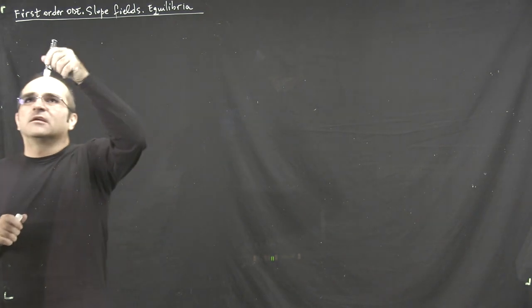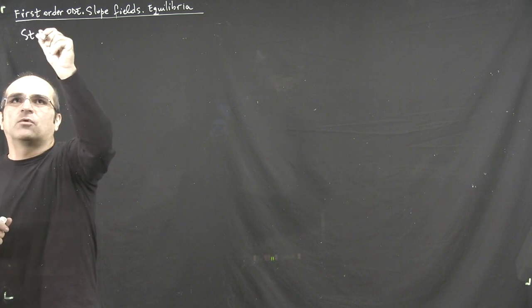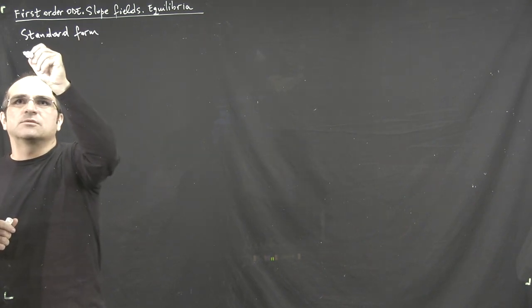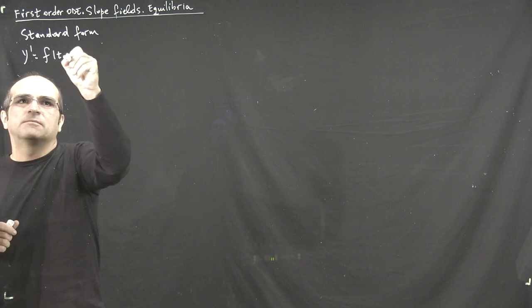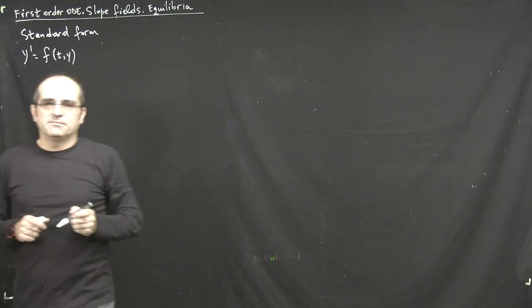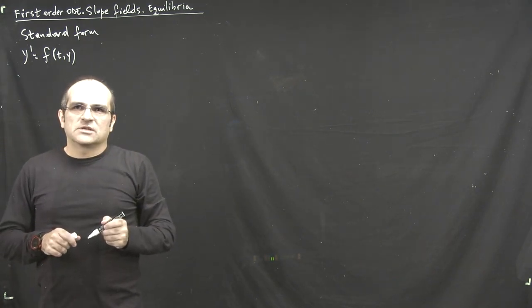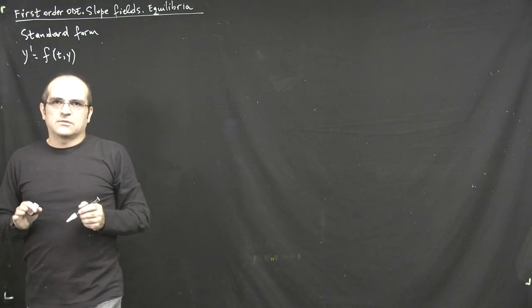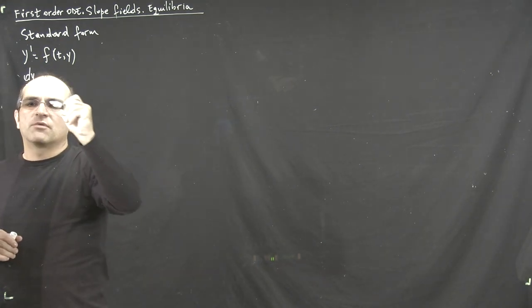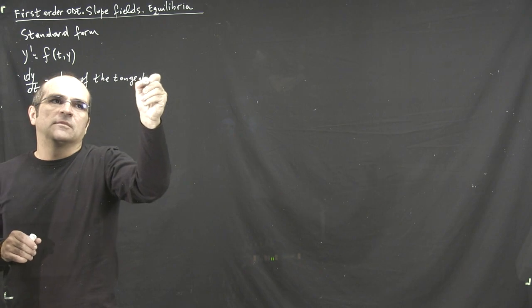Let's write down again how the first-order ODE in the general form looks like — let's call it the standard form of a first-order ODE — which is y' equals f of t, y. On the left side, we have a derivative, y' or dy/dt, and on the right side is just any function of t and y.